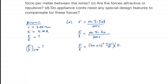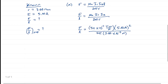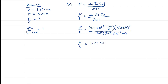Substituting the numbers: mu-zero is 4-pi times 10 to the minus 7 tesla-meters per amp. Each current is 5 amps, so we square that. The distance is 3 millimeters, which is 3 times 10 to the minus 3 meters. This gives a force per length of 1.67 times 10 to the minus 3 newtons per meter.